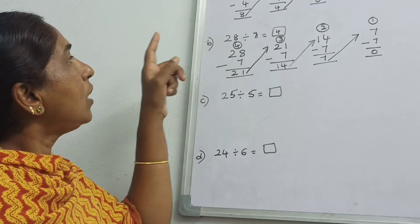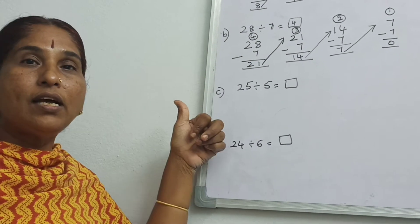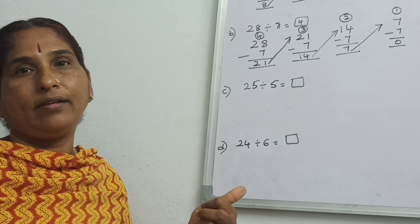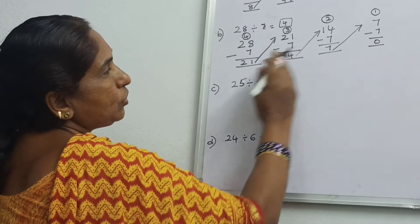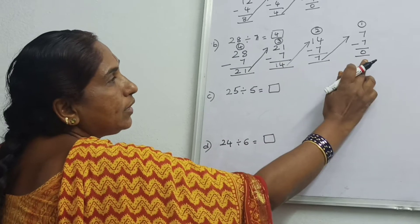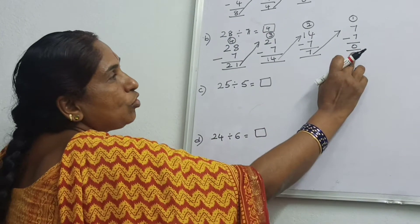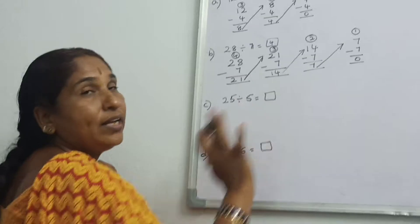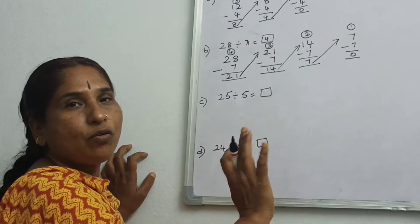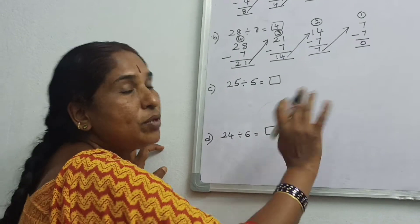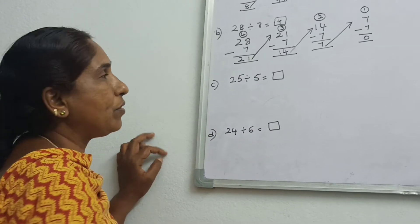28 divided by 7 is equal to 4. Seven 4s are 28, or 4 sevens are 28. Is it clear, children? Repeated subtraction — you subtracted till you got 0. If you don't get 0, somewhere you did wrong. If you get 0, your sum is correct.